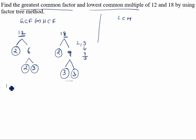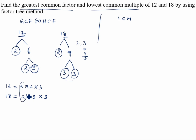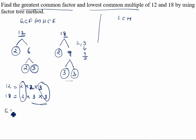So 12 = 2 × 2 × 3. Now compare the prime factors of 12 and 18. The first 2 is common to both — circle it. The next 2 in 12 does not appear in 18's factors, so leave it. Then 3 is common to both — circle it. The common factors are 2 and 3, so GCF of 12 and 18 = 2 × 3 = 6.